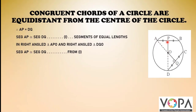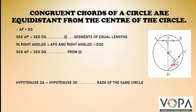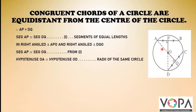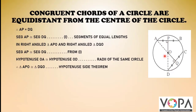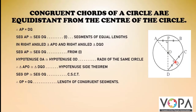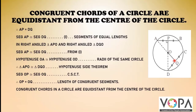Segment AP is congruent to segment DQ. In right angle triangles APO and DQO, hypotenuse OA equals hypotenuse OD, as they are radii of the same circle. Therefore triangle APO is congruent to triangle DQO by the hypotenuse-side theorem. Thus segment OP is congruent to segment OQ, because of corresponding sides of congruent triangles.